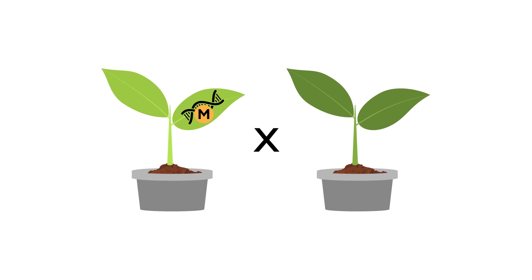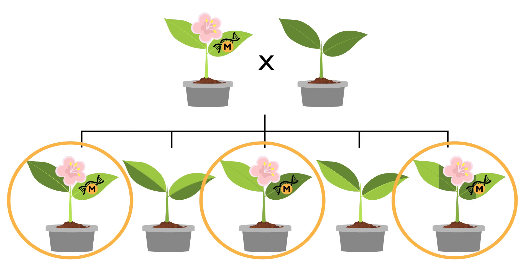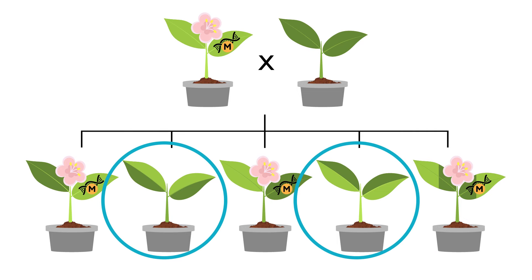If one of the parents has a modified gene for a specific trait, represented here by the flower, some offspring will inherit the modified gene and the trait, and some will not inherit the modified gene or the trait.